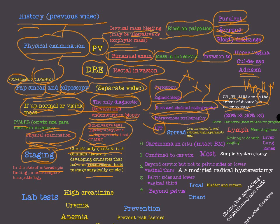Now let's go through the actual stages of cervical cancer: Stage 0, 1, 2, 3, and 4. In Stage 0, we have carcinoma in situ with an intact basement membrane. Invasive cervical cancer is cancer that invades beyond the basement membrane. In carcinoma in situ (Stage 0), the basement membrane remains intact.